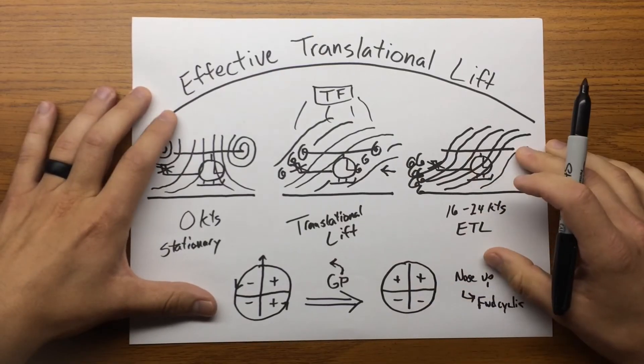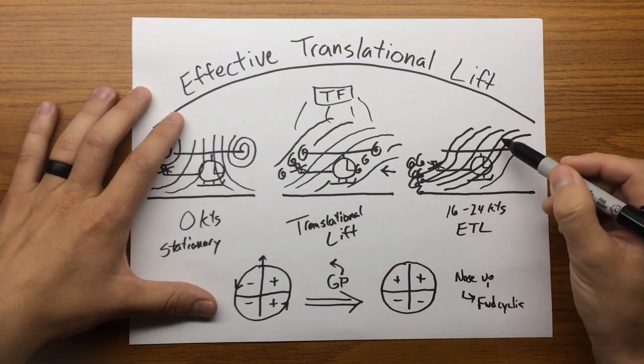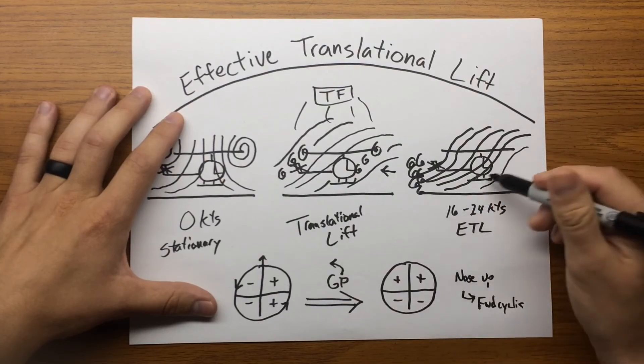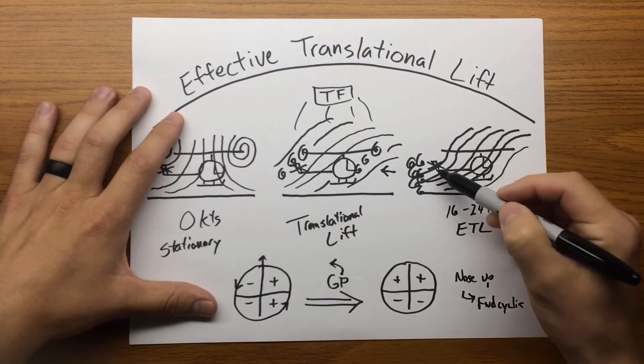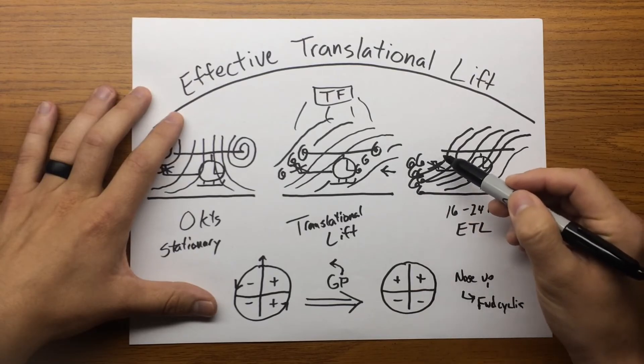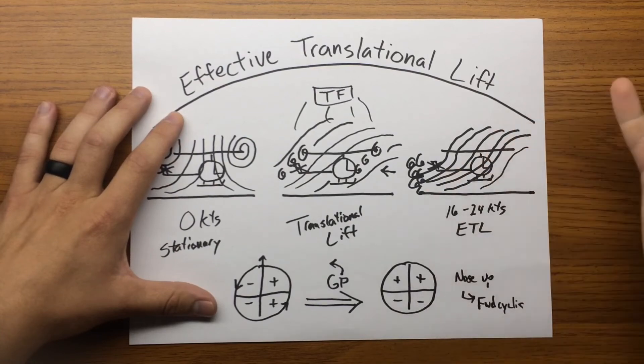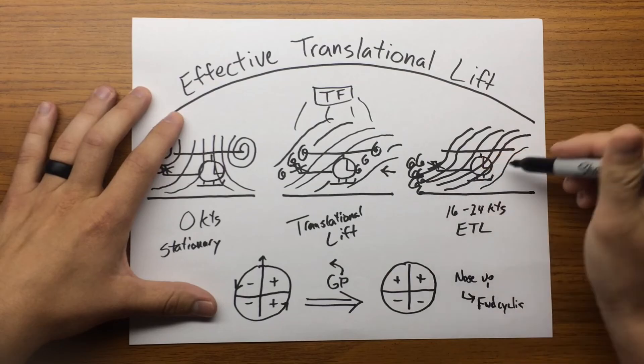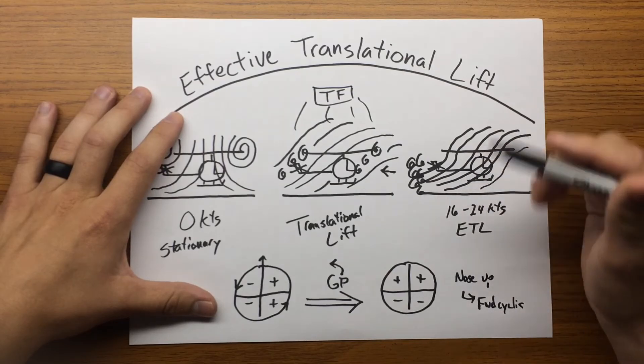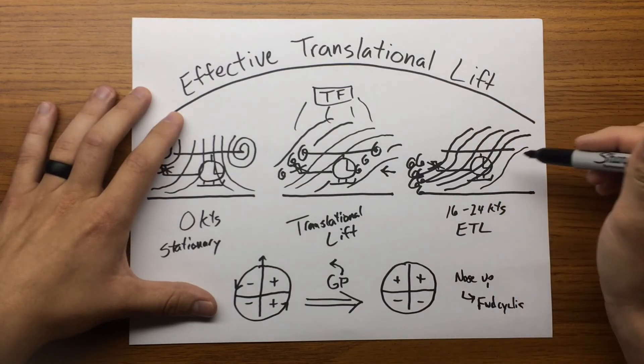Another thing to consider about effective translational lift is as we begin to accelerate into forward flight, the rotor system becomes more efficient. So I require less power to maintain lift. Also, my tail rotor is actually going to be outrunning its own vortices, making the tail rotor more efficient. And my vertical fin is starting to take some of the load that was required for that anti-torque. So with all three of those combined, I'm actually in an environment where I don't need as much left pedal. I'm going to have to give it right pedal as I get more efficient to maintain my heading.